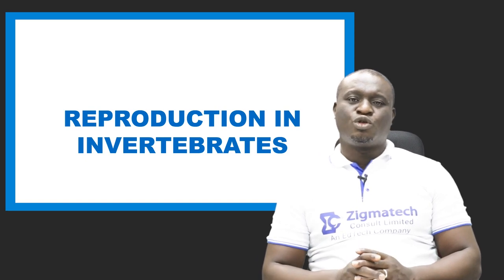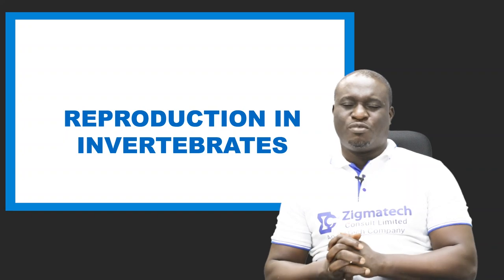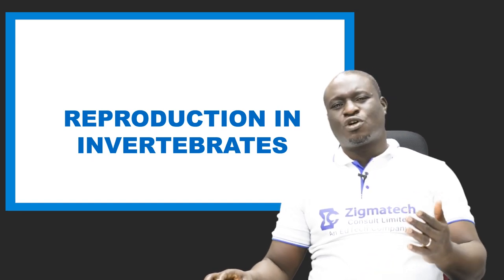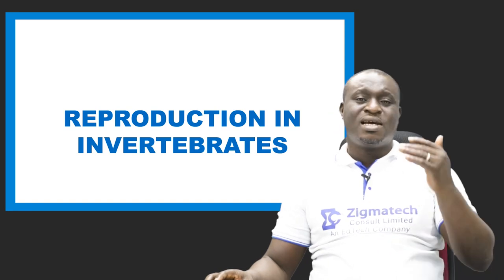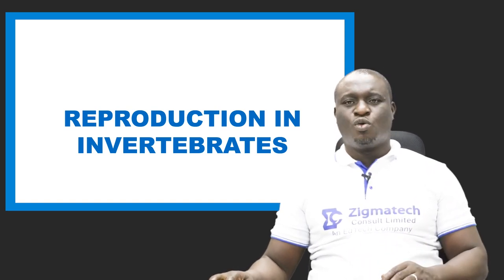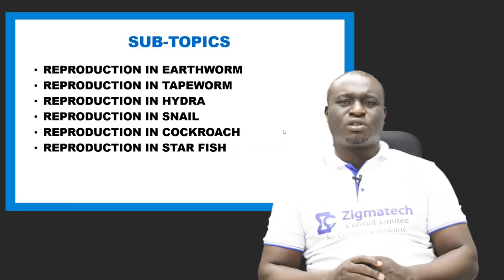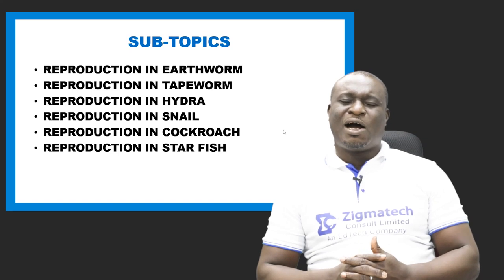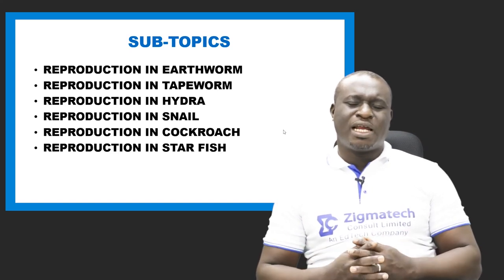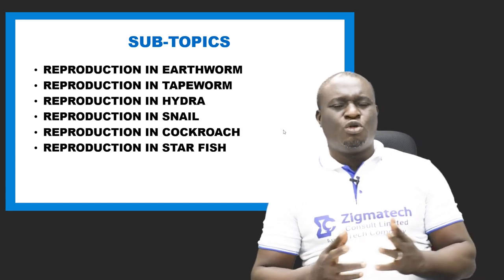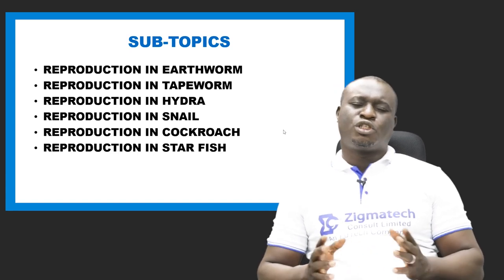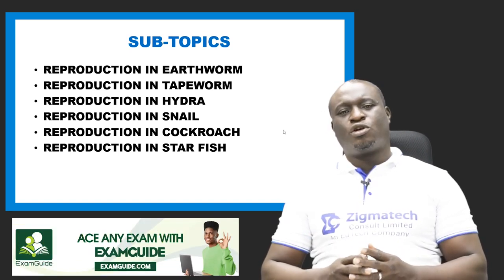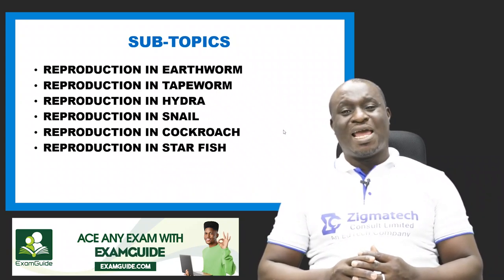Today we're going to be looking at reproduction in invertebrates. We're going to be looking at reproduction in earthworms, hydra, snail, cockroach — which is an insect — and starfish, which is an echinodermata.